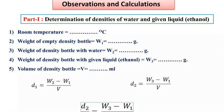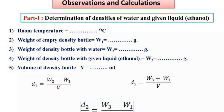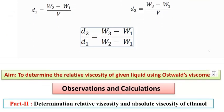Observations and calculation: Determination of densities of water and given liquid ethanol. Write room temperature. Weight of empty density bottle W₁, weight of density bottle with water W₂, weight of density bottle with given liquid ethanol W₃, volume of density bottle V. So D₁ equals W₂ minus W₁ divided by V, D₂ equals W₃ minus W₁ divided by V. Therefore D₂/D₁ equals (W₃ minus W₁)/(W₂ minus W₁).